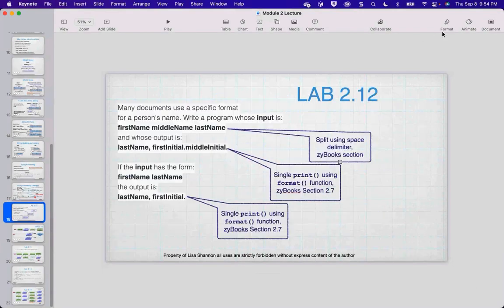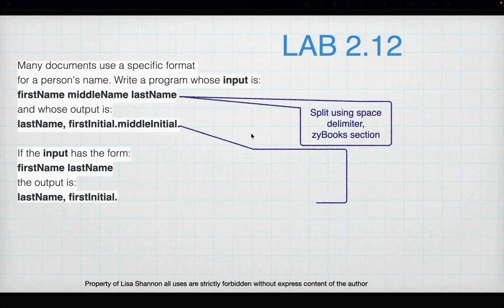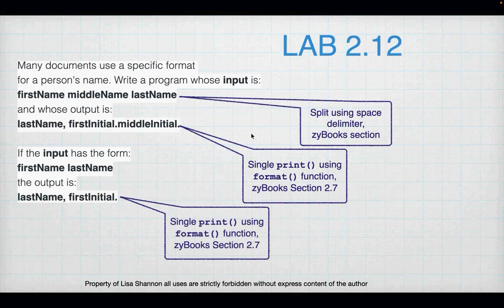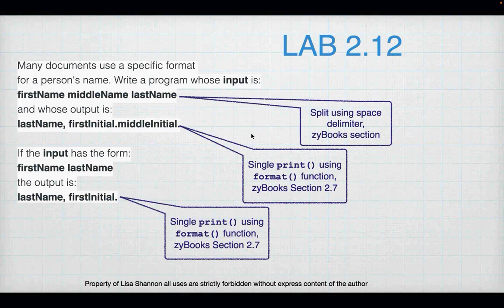Lab 2.12 is a special case. In Zybooks and in this class, we do not provide you all the information you need to properly solve lab 2.12, so I'm going to read through this with you, but I also include the solution linked on the YouTube site. You can't expect to use if statements and branching when we haven't gone over it well enough — we don't do that until next week. Lab 2.12 requires that. So don't spend your time being frustrated because we haven't given you everything.